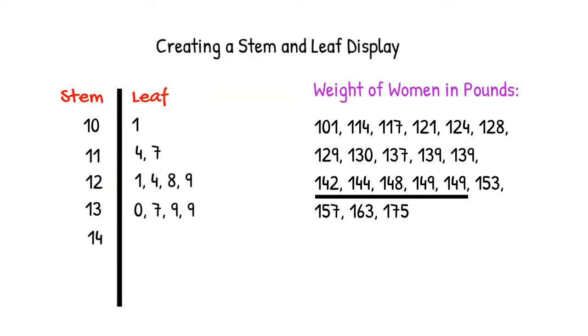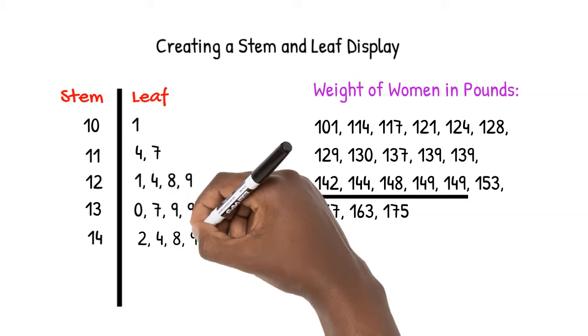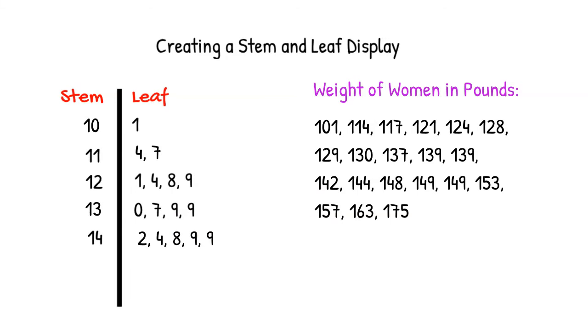With a stem of 14, the values in our leaf are 2, 4, 8, 9, and 9.